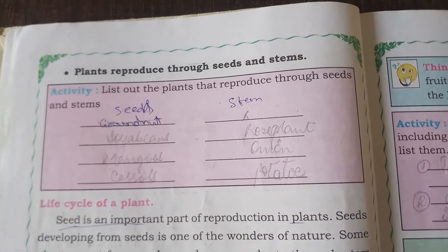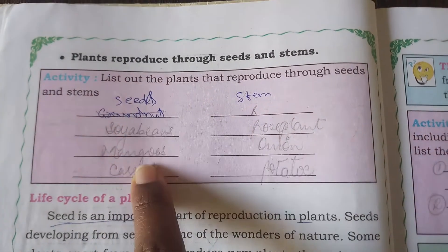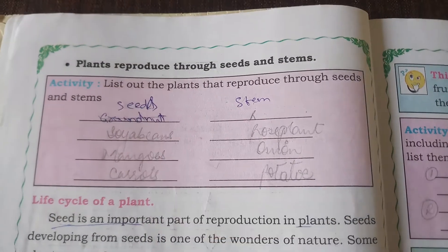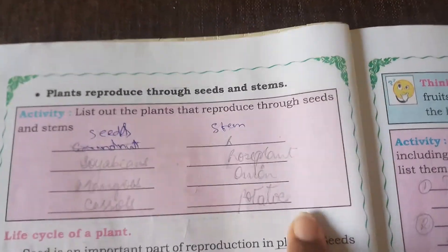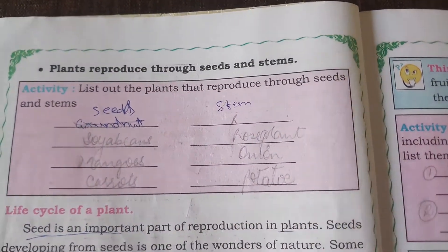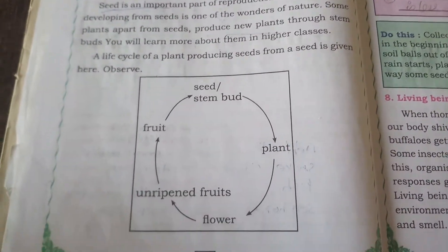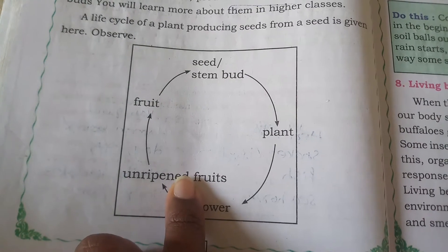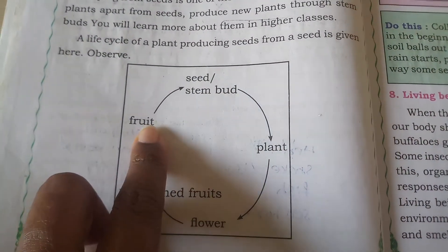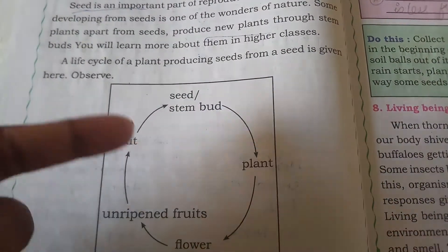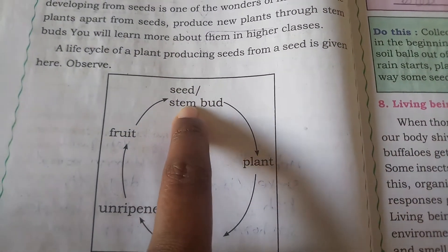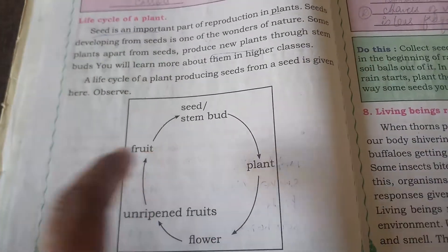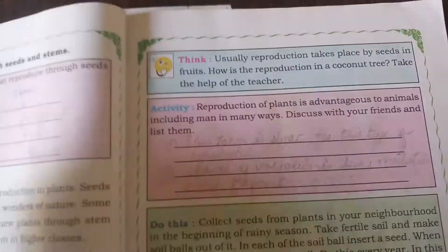Plants produce seeds — soya beans, mangoes, and carrots all have seeds inside. Some plants reproduce through stems — for example, rose plants, onion, and potato. The life cycle of a plant goes: flower → unripened fruit (greenish, like a green tomato) → ripe fruit (like a red apple from a green apple) → seed → plant → flower again.